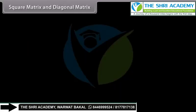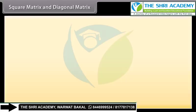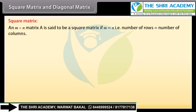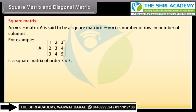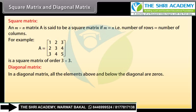Square matrix and diagonal matrix. An M by N matrix A is said to be a square matrix if M is equal to N, that is, the number of rows is equal to the number of columns. For example, A is a square matrix of order 3 by 3. In a diagonal matrix, all the elements above and below the diagonal are zeros. For example, B is a diagonal matrix.